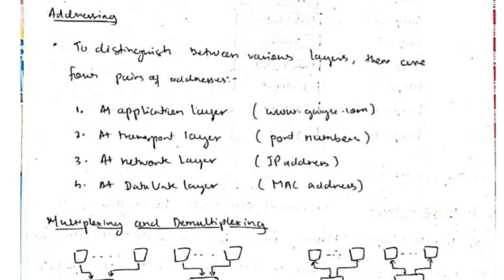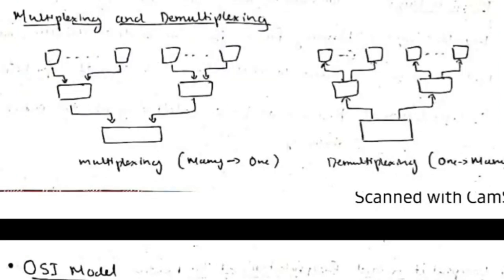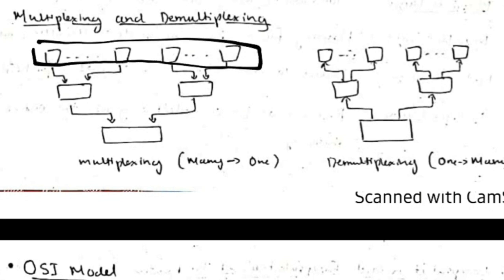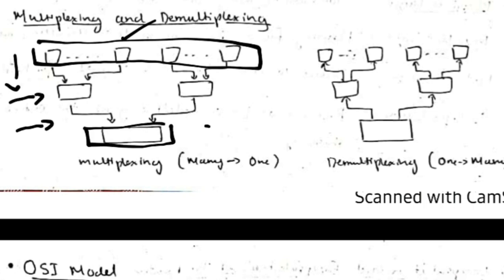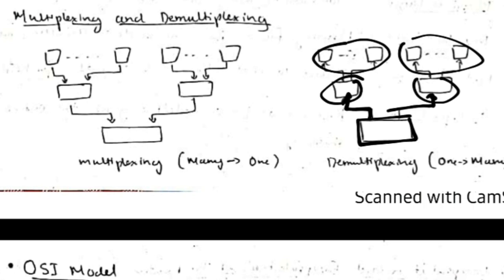At each layer, an address is needed to distinguish between layers. At the application layer the address is like www.google.com; at the transport layer, port numbers are used; at the network layer, IP addresses are used; at the data link layer, MAC addresses identify each connected device. Multiplexing takes many data inputs and selects one according to each layer; demultiplexing takes a main input and distributes it to upper layers, with each layer handling different types of data.